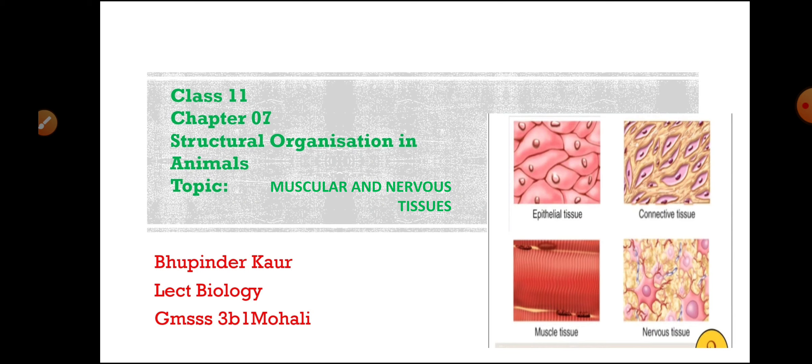Dear students, we all know that tissues are groups of cells performing a specific function, and the tissues present in our body are of 4 types: epithelial tissue, connective tissue, muscular tissue, and nervous tissue. In my previous lectures, I have discussed epithelial and connective tissue in detail, and today we will be discussing muscular and nervous tissue.